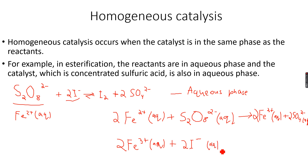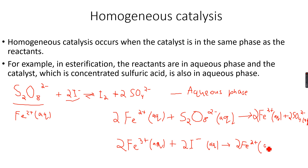As the Fe³⁺ ions react with the iodide ions, we again get 2Fe²⁺ ions because the Fe³⁺ ions are reduced and the iodide ions are oxidized. So we get I₂, which is also aqueous.